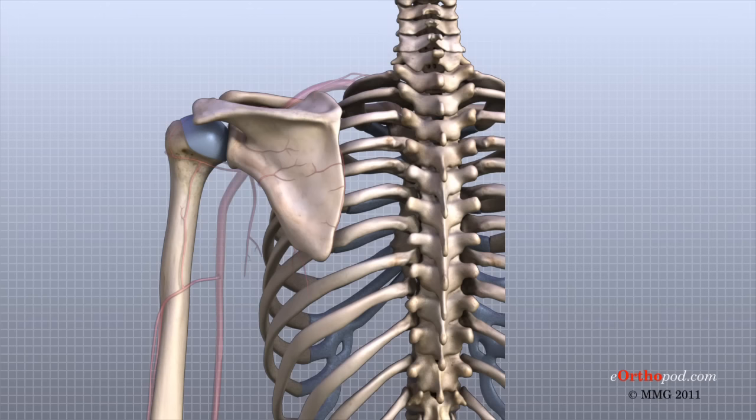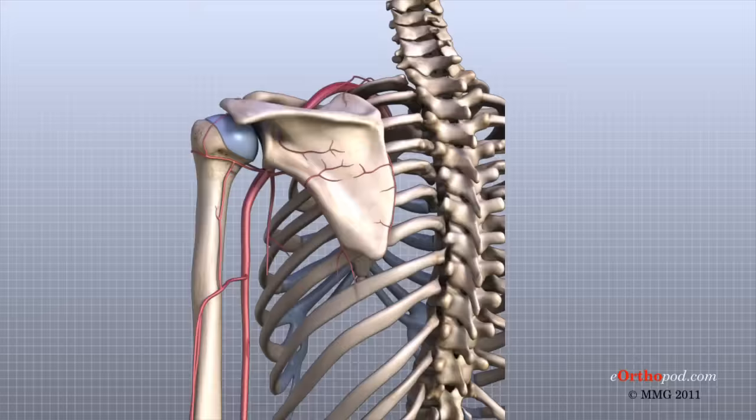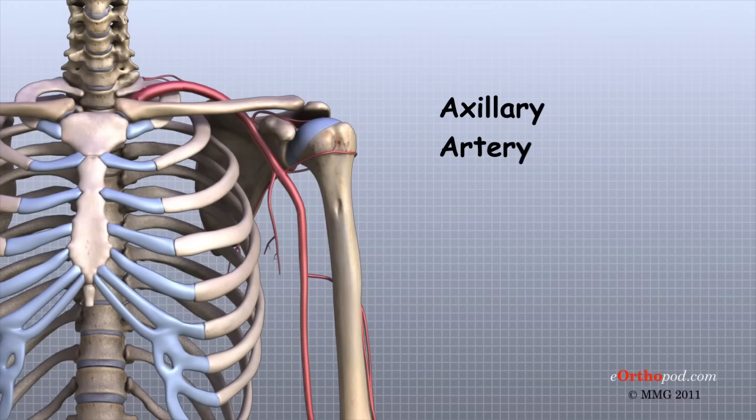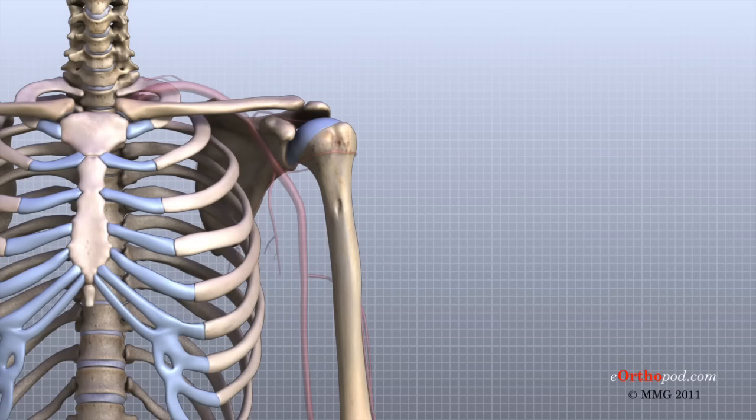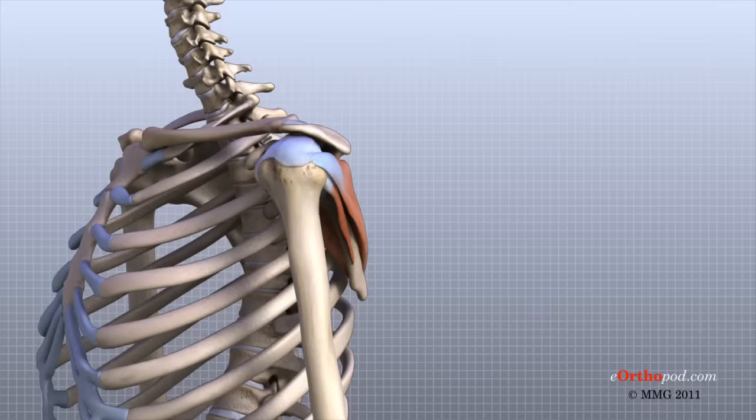Traveling along with the nerves are the large vessels that supply the arm with blood. The large axillary artery travels through the axilla. If you place your hand in your armpit, you may be able to feel the pulsing of this large artery. The axillary artery has many smaller branches that supply blood to different parts of the shoulder. The shoulder has a very rich blood supply.